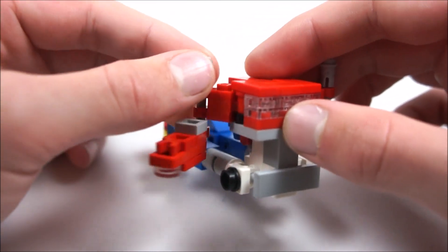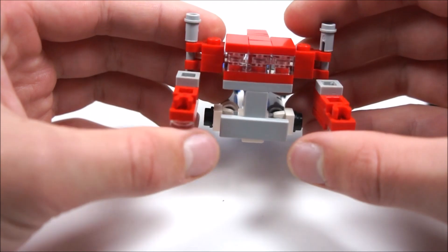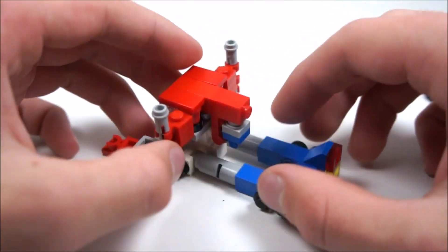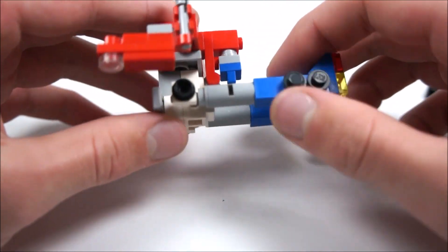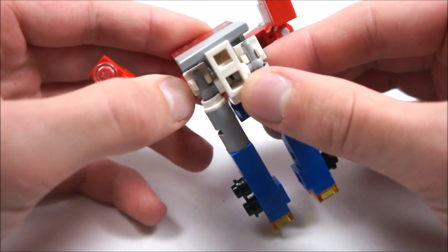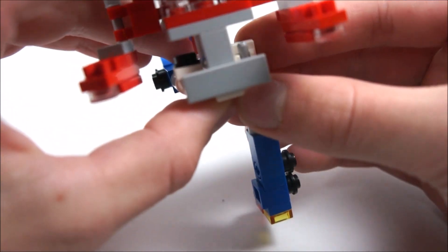You just do that on both sides. His arms pull out nicely like that. This makes him look much better, much more like Optimus Prime. And then you're going to push these back and then pull the legs down.